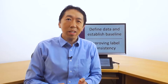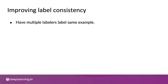Let's take a look at some ways to improve the consistency of your labels. Here's a general process you can use. If you are worried about labels being inconsistent, find a few examples and have multiple labelers label the same example. In some cases, you can also have the same labeler label an example, wait a while until they've hopefully forgotten — the technical term is 'washed out' — let them take a break and then come back and relabel it, and see if they're even consistent with themselves.